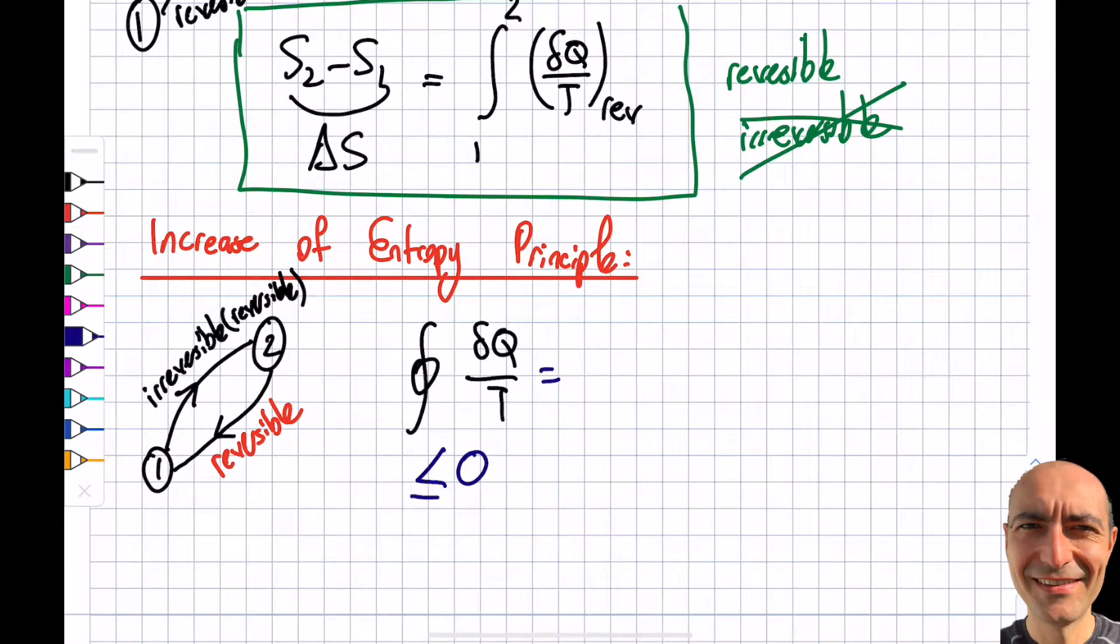This over a cycle will be equal to 0 if it is reversible. If it is irreversible, it will be less than 0, right? Right here. So then this needs to be basically like this. But I can also, you know, as I go from 1 to 2, I know my details of my cycle now. I go 1 to 2, del q by t, and also I go from then 2 to 1, del q by t.